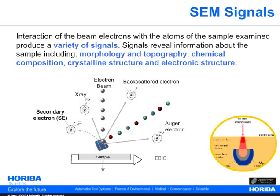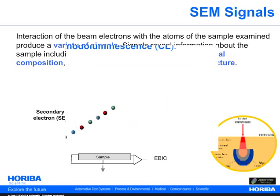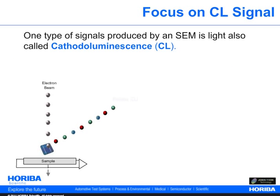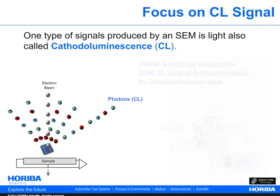SEM is routinely used to characterize surface topography and morphology, chemical composition, and crystalline and electronic structure. One type of signal produced by an SEM is light, also called cathodoluminescence.